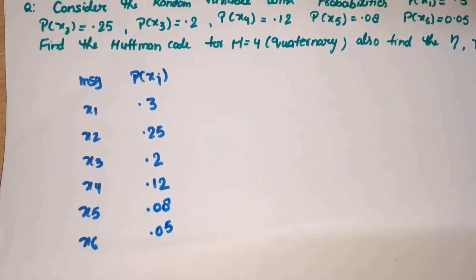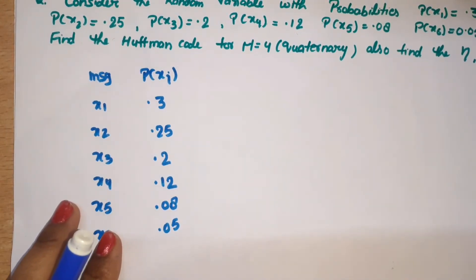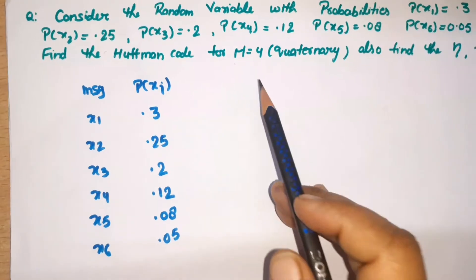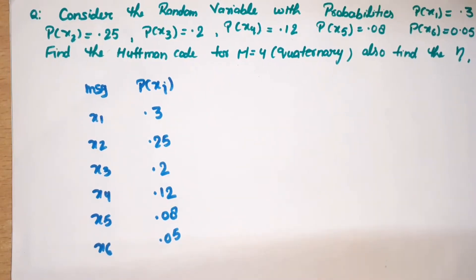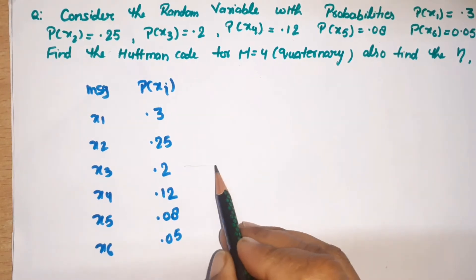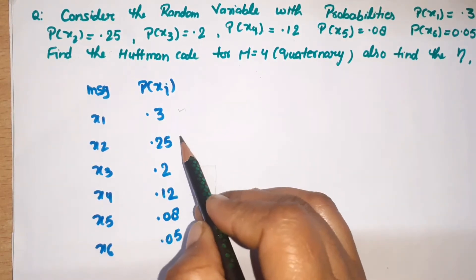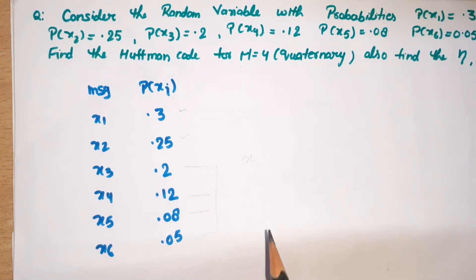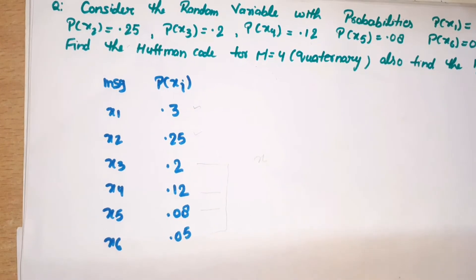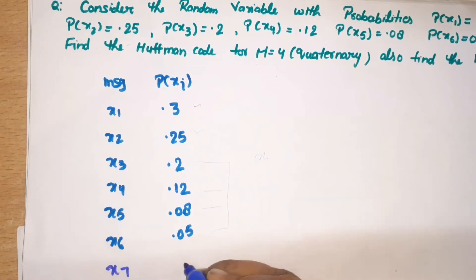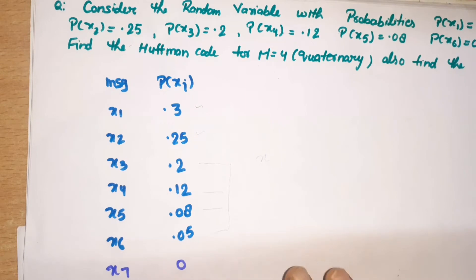For quaternary, we need to combine 4 values together. You must remember that for m = 4, in the last step we should have 4 probabilities remaining. If we combine the last 4, we get only 3 values total. This means we need to add an extra dummy bit. We add x7 with value 0 as a dummy probability.